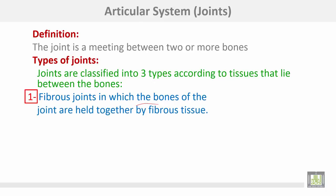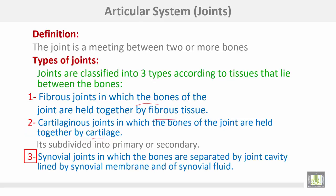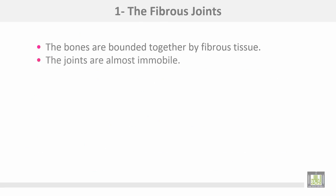Number one: fibrous joints, in which the bones are held together by fibrous tissue. Number two: cartilaginous joints, in which the bones are held together by cartilage, subdivided into primary and secondary. Number three: synovial joints, in which the bones are separated by a joint cavity lined by synovial membrane and containing synovial fluid. Fibrous joints are almost immobile.